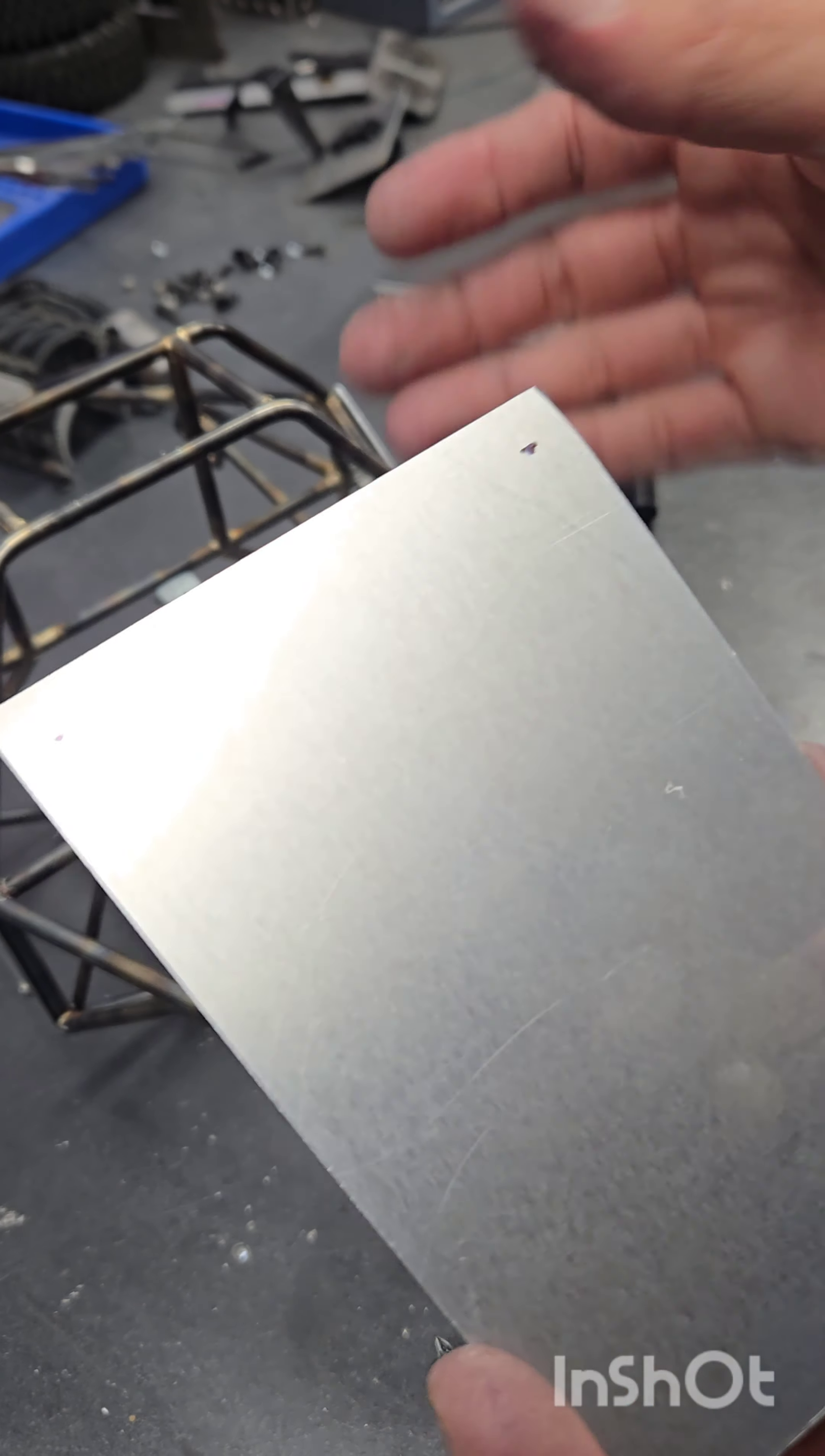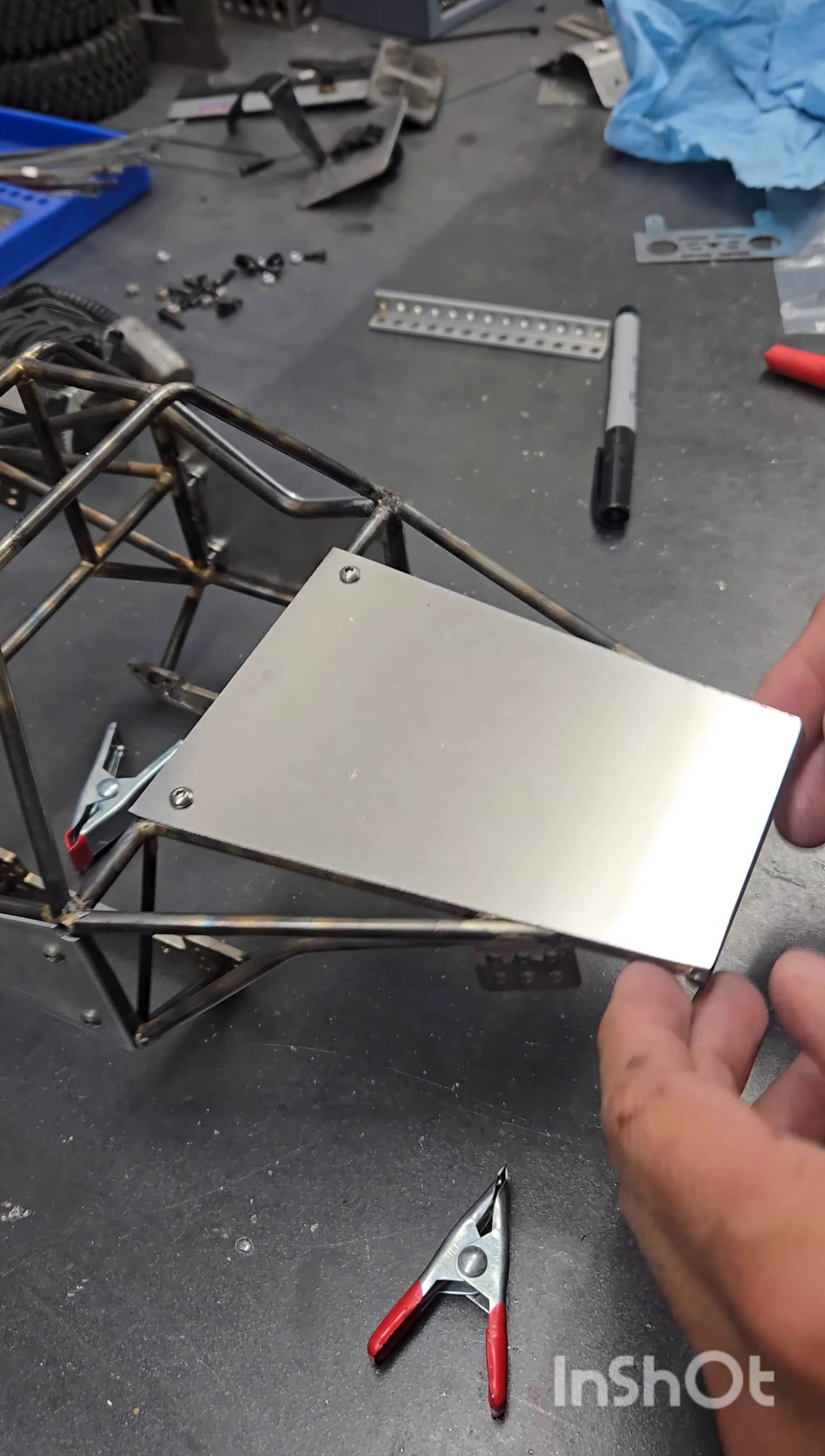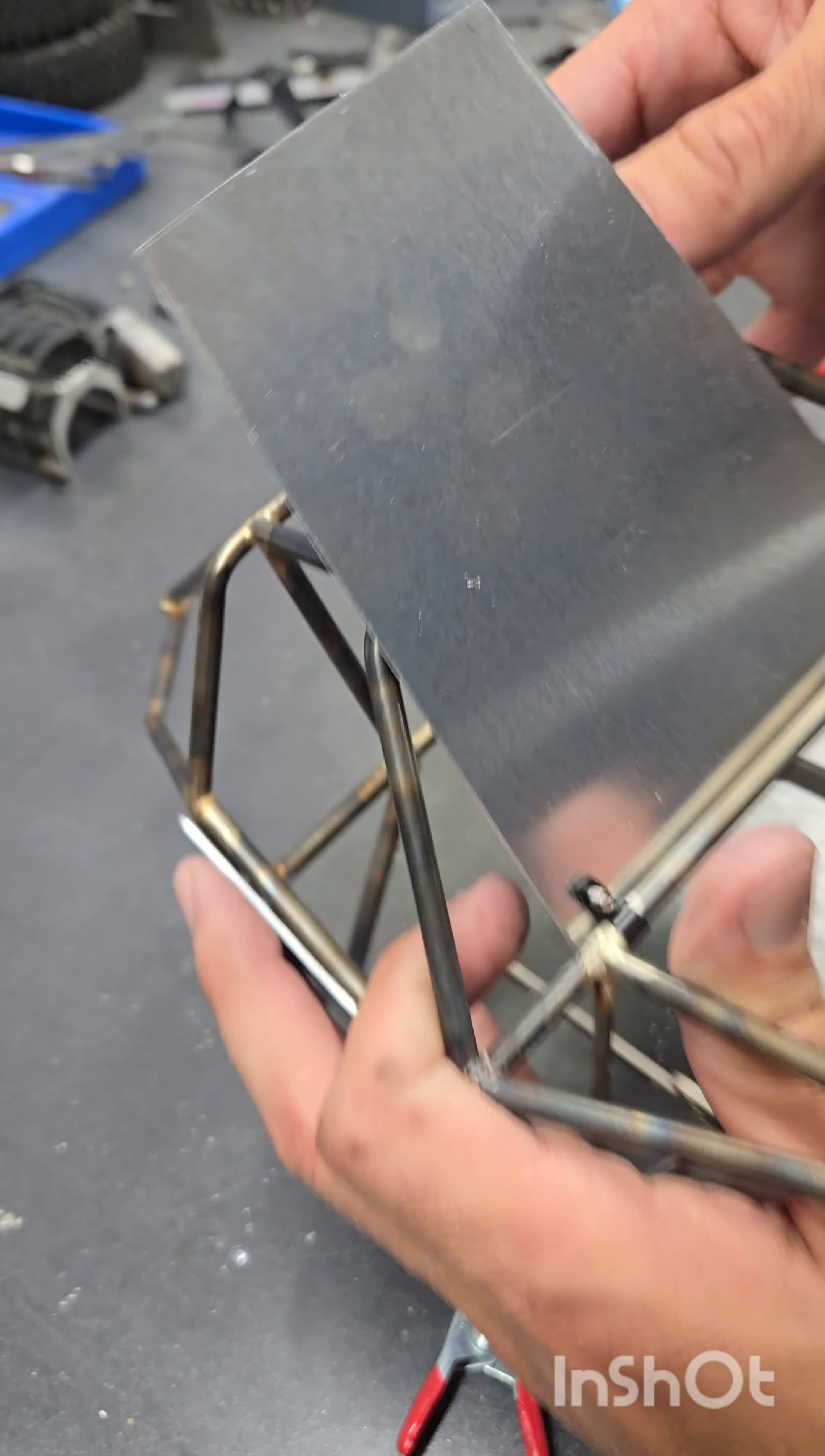Now we know our hole placement, we can center punch it and get it reinstalled. Once it's reinstalled, we're going to go ahead and make sure it functions right, and then we're going to try to center it as best we can. Same scribe process to get that same reveal with our other panels.